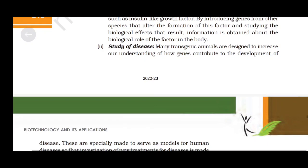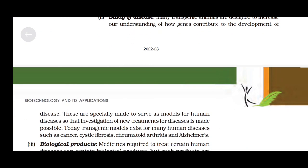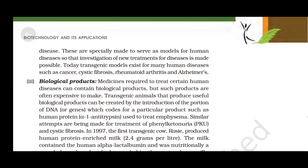Second, study of disease. Many transgenic animals are designed to increase our understanding of how genes contribute to the development of disease. These are specifically made to serve as models for human diseases, so that investigation of new treatments is made possible. Today, transgenic models exist for many human diseases such as cancer, cystic fibrosis, rheumatoid arthritis and Alzheimer's.